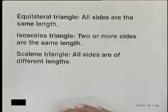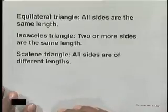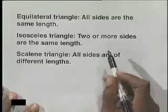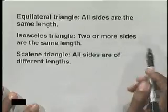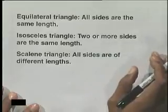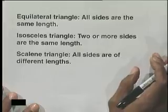We say that an equilateral triangle is a triangle where all the sides are the same length. An isosceles triangle is one where two or more sides are the same length. And a scalene triangle has all sides of different lengths.